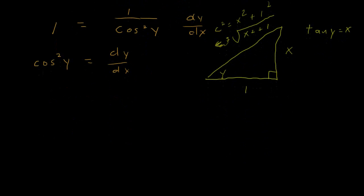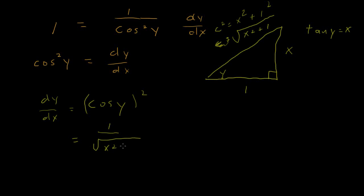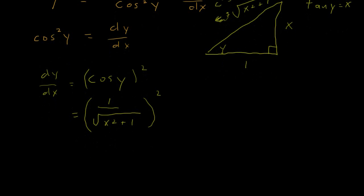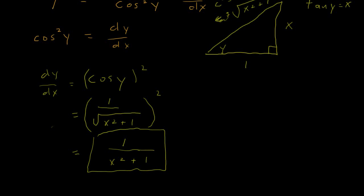Now we can replace cosine squared of y. The cosine of y is adjacent over hypotenuse, which is 1 over the square root of x squared plus 1. Squaring that: the numerator becomes 1 squared, which is 1, and the denominator becomes the square of the square root of x squared plus 1, which is x squared plus 1. So the derivative of the inverse tangent is 1 over x squared plus 1.